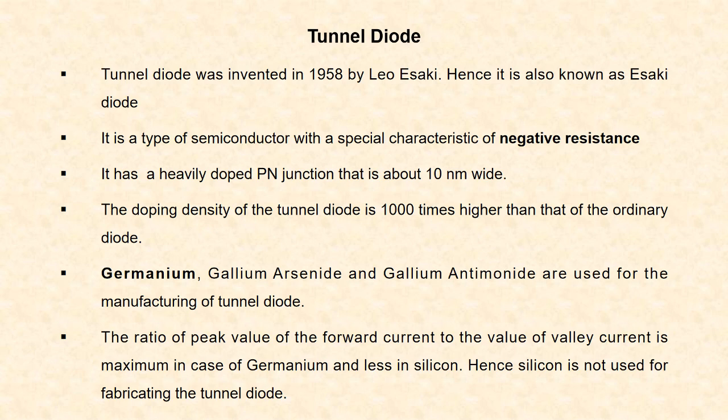It is a heavily doped p-n junction that is about 10 nm wide. The doping density of tunnel diode is 1000 times higher than that of ordinary diode. The materials used for fabricating tunnel diode are germanium, gallium arsenide, and gallium antimonide. Of this, germanium is most widely used.